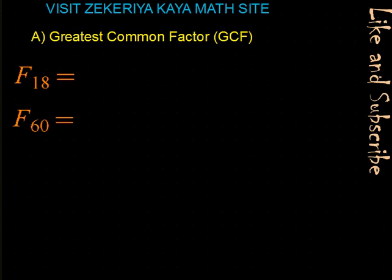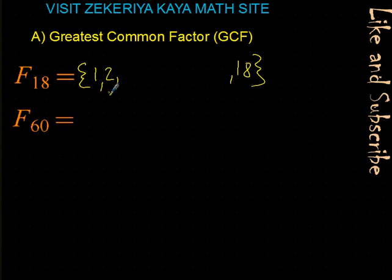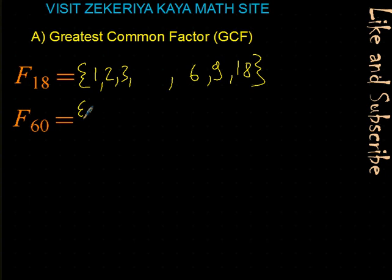For greatest common factor, let's first look at an example. We will record the factors of 18 and 60. Factors of 18: 1, 2, 3, 6, 9, 18. We check each product pair: 1 times 18, 2 times 9, 3 times 6. Once we see repeated numbers, we stop.